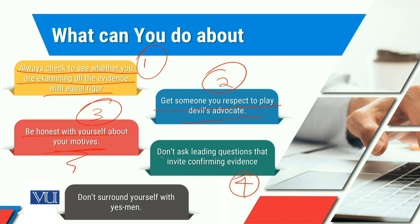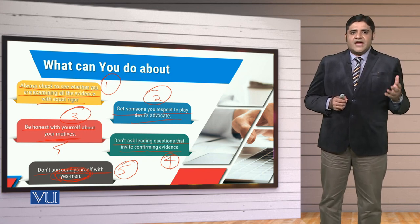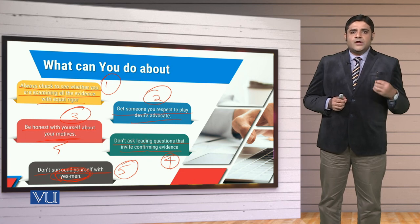The fourth solution: don't ask leading questions that invite confirming evidence. You need to be careful about which questions you ask and what their after-effects are on you. The fifth action: don't surround yourself with yes-men, because they are not there to make things happen in a positive manner — they are only there to gain favoritism. We must try to avoid yes-men because they are not there for our correction; they actually create traps for us.